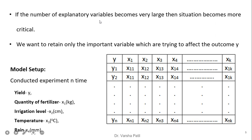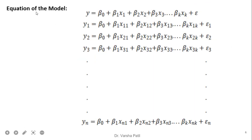If the number of explanatory variables becomes very large, the situation becomes more critical. We want to retain only the important variables which affect the outcome y. For the model setup, suppose we conduct an experiment n times with k independent variables — for example, quantity of fertilizer, irrigation level, temperature, and rainfall. For k independent variables we can represent the data as a matrix with n records, x₁₁ through x₁ₖ, and we want to find out the parameters. The model equation is y = β₀ + β₁x₁ + ... + βₖxₖ + ε.